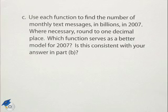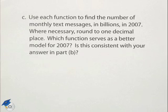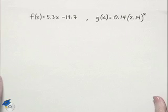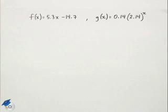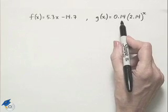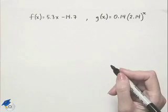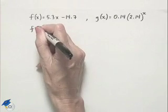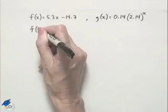Use each function to find the number of monthly text messages in billions in 2007. Where necessary, round to one decimal place. Then answer: which function serves as a better model for 2007, and is this consistent with your answer in part b? We're going to look at our two functions: f of x equals 5.3x minus 14.7 is our linear model, and g of x equals 0.14 times 2.14 to the x power is our exponential model. We'll evaluate at x equals 7 for the year 2007.